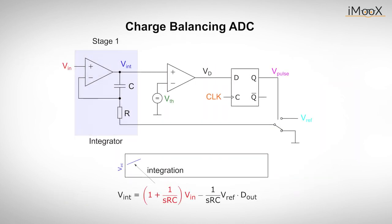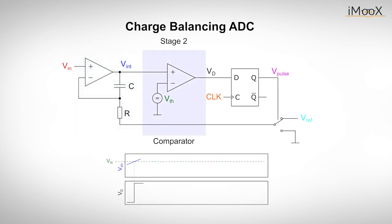Now, let's take a look at what the corresponding circuit looks like. The first stage is an operational amplifier that serves as an integrator for the input voltage. At the beginning the output is low, so the integration process starts and the integrated input voltage Vint increases. The next stage consists of a comparator that compares Vint with a threshold voltage.